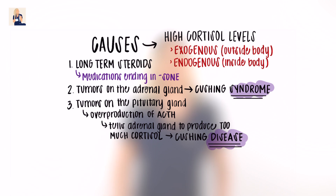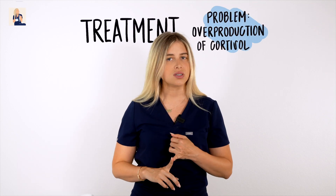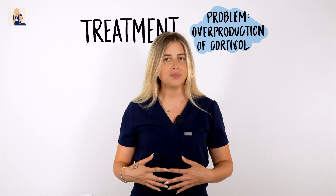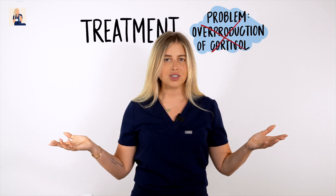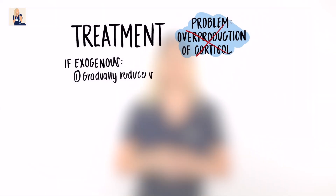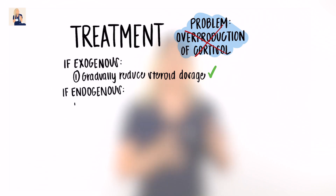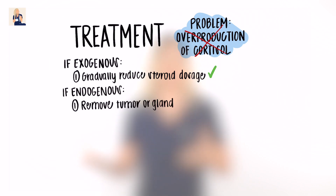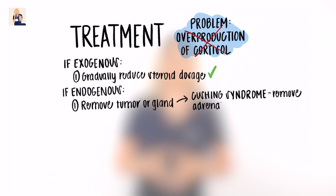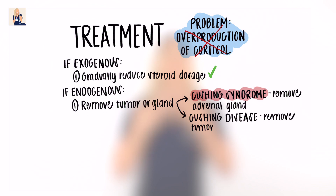So you've been diagnosed with Cushing syndrome — how do you treat it? The whole problem is an overproduction of steroid hormones, specifically cortisol, due to an internal or external factor, so we have to eliminate that factor. If this is an exogenous factor, we gradually reduce steroid dosage to a level that will effectively control Cushing syndrome and treat the disorder it's initially being taken for. If this is an endogenous factor, we surgically remove the tumor or affected gland — in Cushing syndrome, we remove the affected adrenal gland, and in Cushing's disease, we remove the tumor on the pituitary gland.